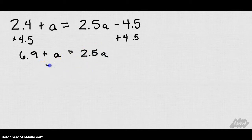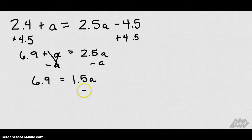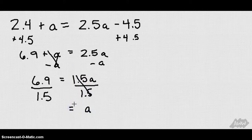And now let's subtract a from both sides. We get 6.9 equals 2.5a minus 1a which is going to leave us with 1.5a. Then we're going to divide 1.5 from each side leaving us with a on the right side.